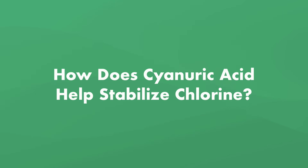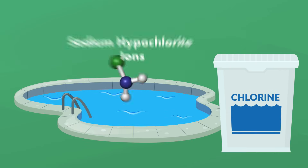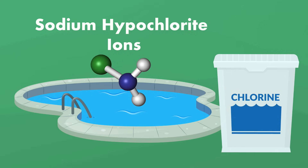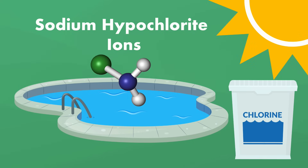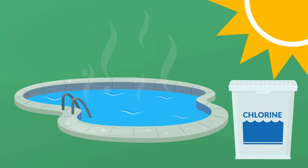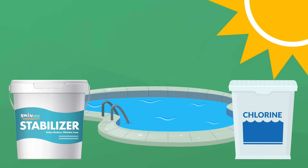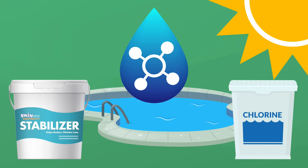So how does cyanuric acid help stabilize chlorine? When you add chlorine to your pool water, it transforms into sodium hypochlorite ions. When UV rays from the sun hit those ions, they break apart and the chlorine evaporates, leaving very little free chlorine in your pool water. Cyanuric acid binds to those ions and prevents them from breaking apart when exposed to UV rays.